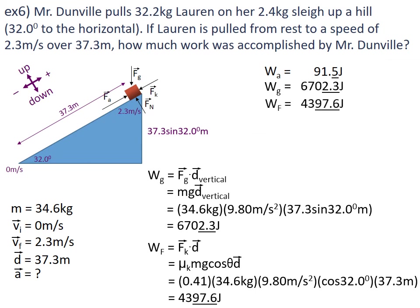So that's work going into friction. How much work did Mr. Dunville do? We're going to have to add these all up to find the total amount of work Mr. Dunville has done. When I add those up, that gives me 11,191.5 joules.